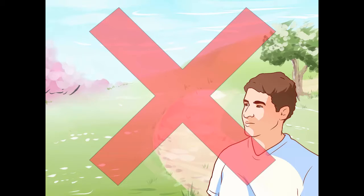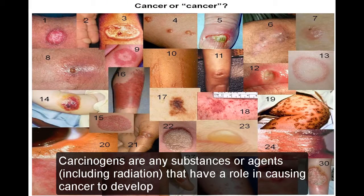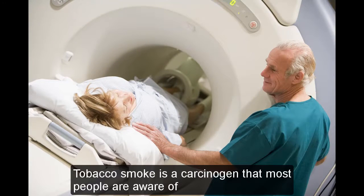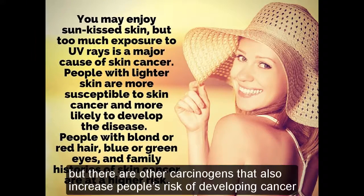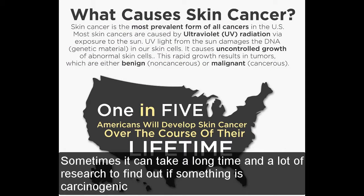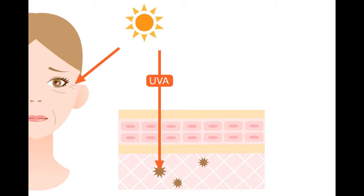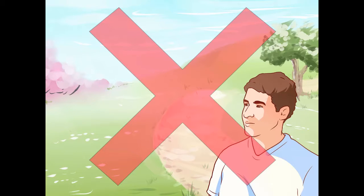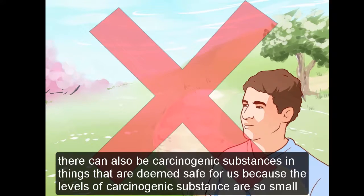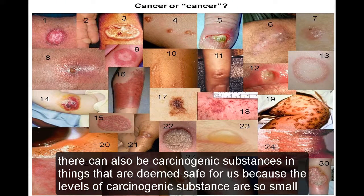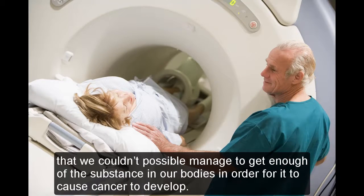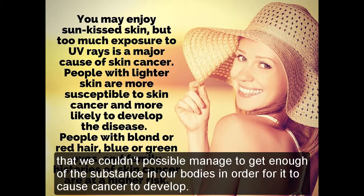5. Other Carcinogens. Carcinogens are any substances or agents, including radiation, that have a role in causing cancer to develop. Tobacco smoke is a carcinogen that most people are aware of, but there are other carcinogens that also increase people's risk of developing cancer. Sometimes it can take a long time and a lot of research to find out if something is carcinogenic, and if something contains too high levels of a carcinogenic substance, it is decided that such substances cannot be used anymore. Still, there can also be carcinogenic substances that are deemed safe for us because the levels of carcinogenic substance are so small that we couldn't possibly get enough of the substance in our bodies in order for it to cause cancer to develop.